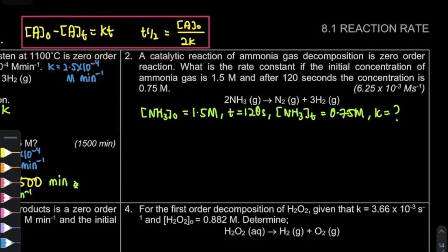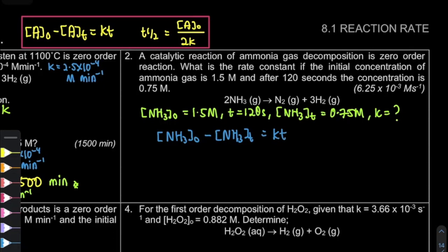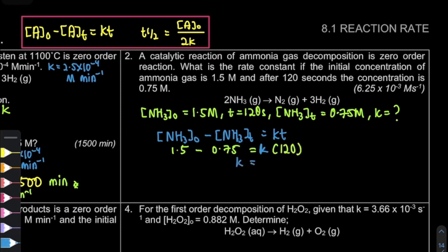This formula is a direct substitution. Make sure that in the general formula we use A, but for the given equation we substitute the specific reactant — that is why the formula here uses NH₃, which is the reactant for questions 1 and 2. We get K = 6.25 × 10⁻³.